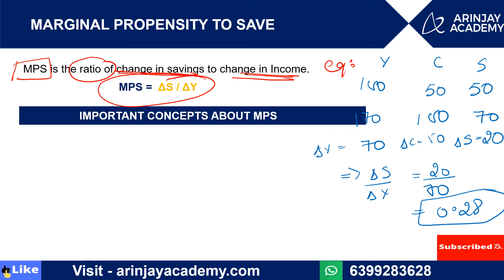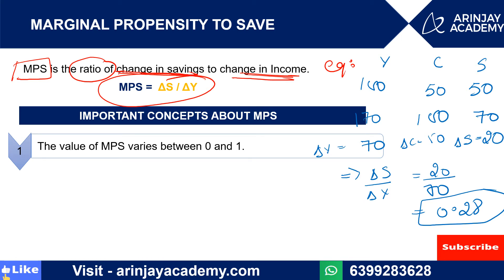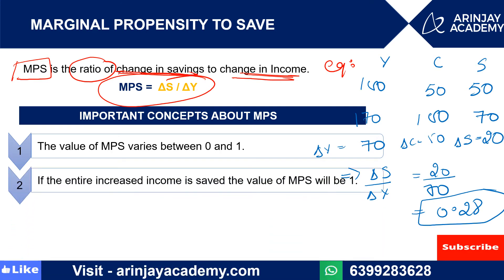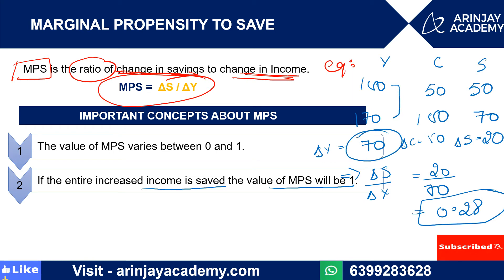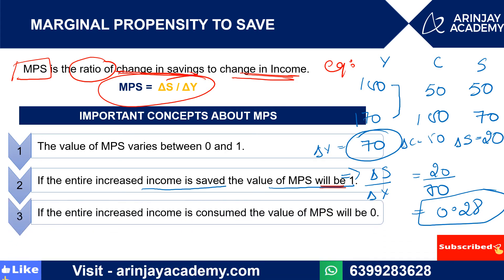Now let's see some important concepts about MPS. First, the value of MPS varies between 0 and 1 — maximum value can be 1, minimum value can be 0. MPS equals 1 when your entire increased income is saved and nothing is consumed. MPS equals 0 when the entire increased income is consumed and nothing is saved.